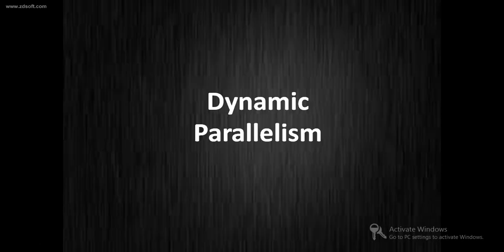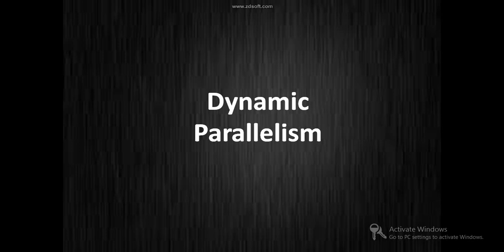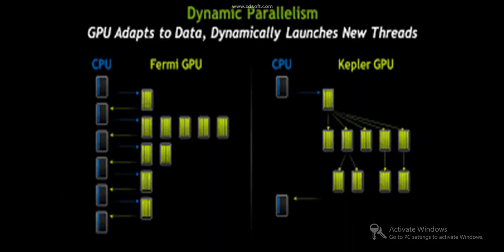The second feature is dynamic parallelism. Dynamic parallelism is a technique which provides a way for nesting kernels. Kernels are the CUDA functions which run on the GPU — I'll talk more about kernels later. It enables CUDA kernels to call another kernel without the interaction of the CPU. The launching kernel is named the parent kernel, and the new kernel it launches is named the child kernel. With Fermi, only the CPU could dispatch a new kernel, but with Kepler, GPUs can dispatch a new kernel, freeing up the CPU to work on other tasks.